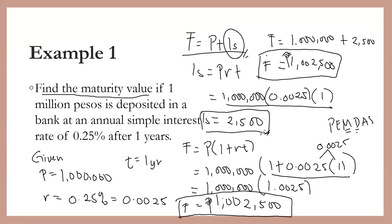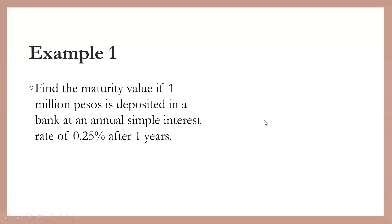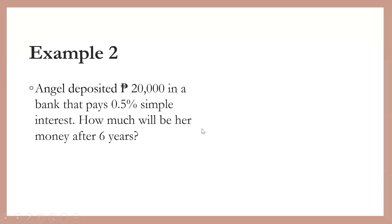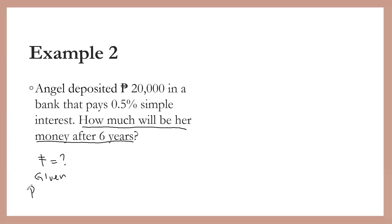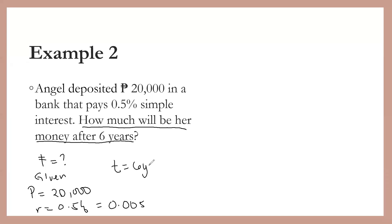It's up to you which of these two formulas to use. Now let's have the second example. This time I'm going to use the second formula. Angel deposited 20,000 pesos in a bank that pays 0.5% simple interest. How much will be her money after six years? We are asked to solve for the future or maturity value. The given values are: principal equals 20,000 pesos, rate equals 0.5% or 0.005 in decimal, and time equals 6 years.